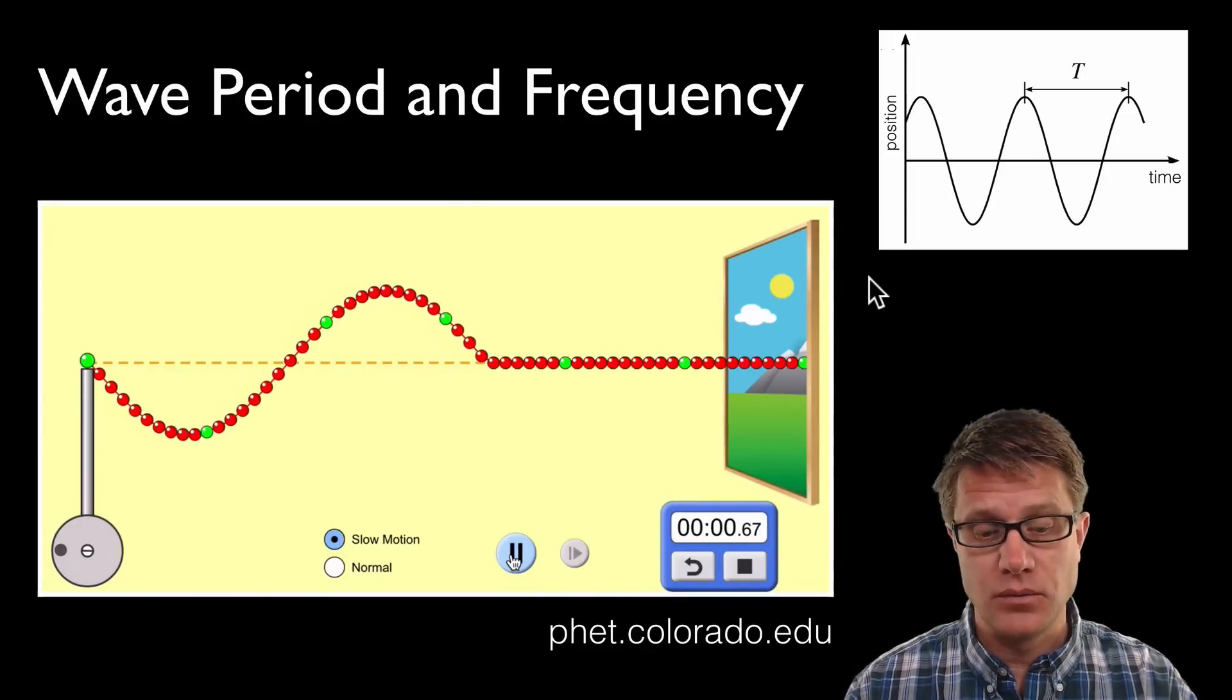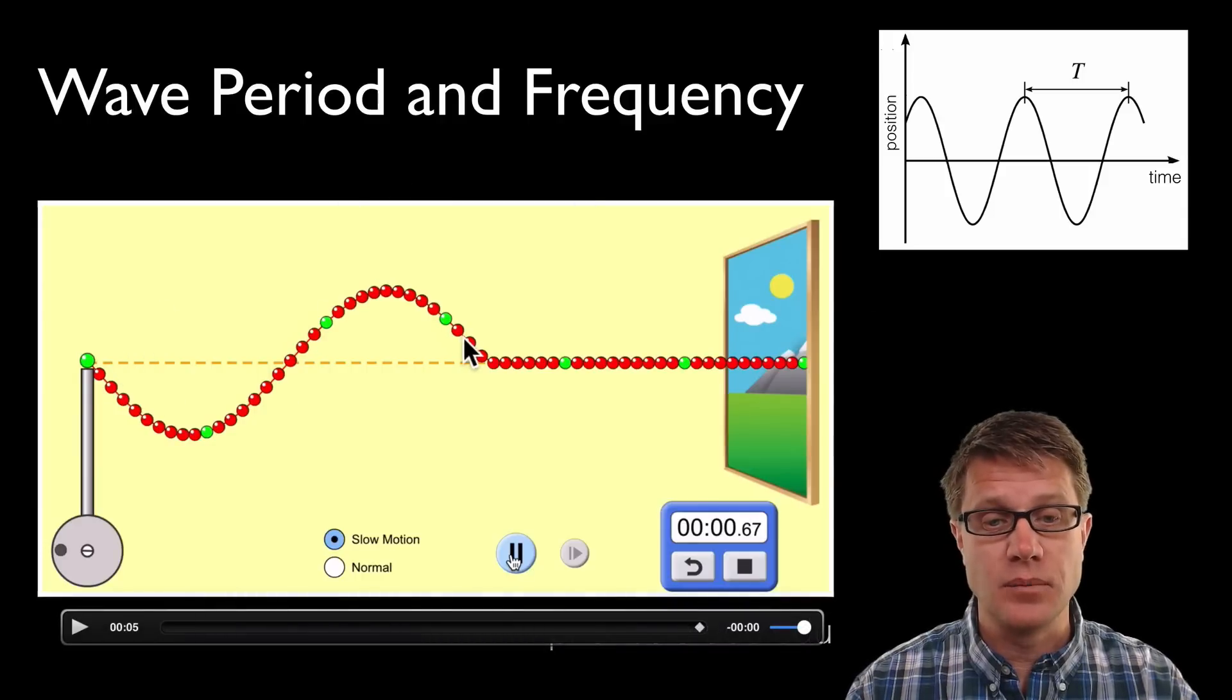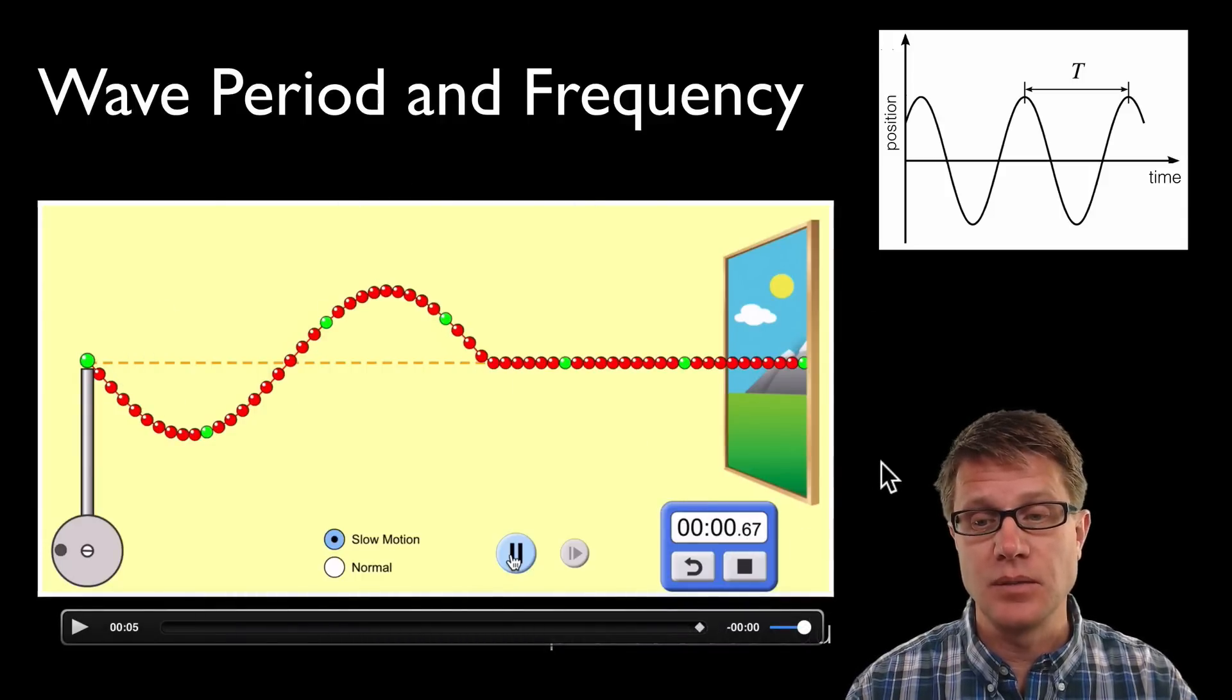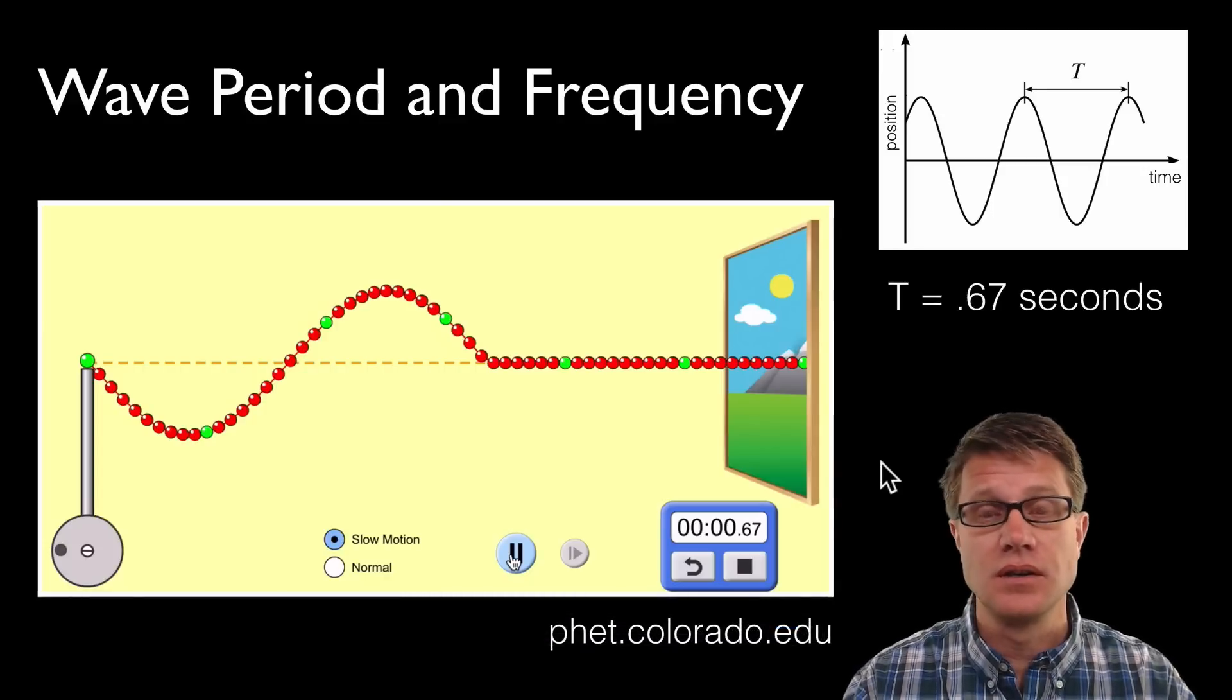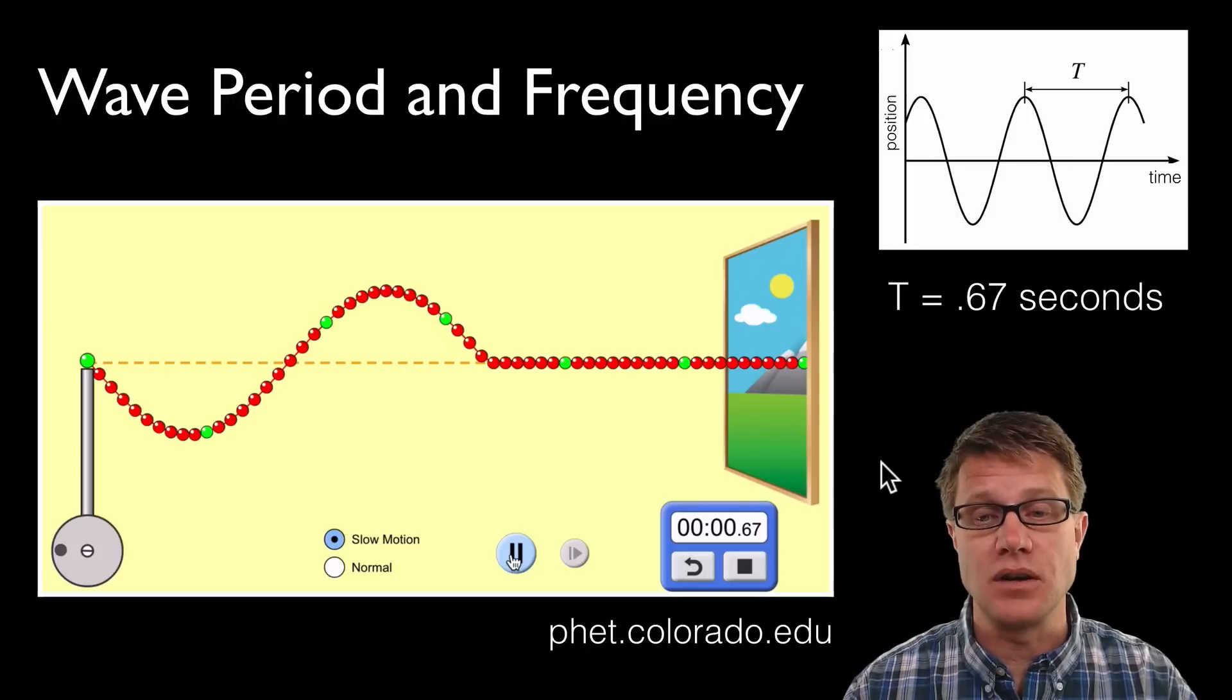What's going to be our period? Well, we've got the one wave here. But what's the period? It's the time - it's simply 0.67 seconds. That's the time distance between waves. We're just about to start another wave.